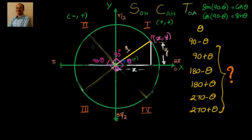If we take sin of 90 minus theta and draw this right angle triangle, you can see that the x and y values swap. That means the values of sine and cosine are exchanged — that's how 90 plus theta is behaving.